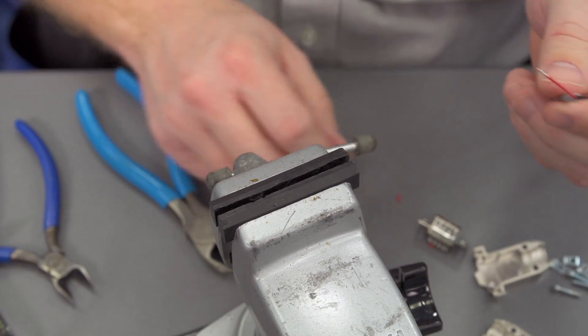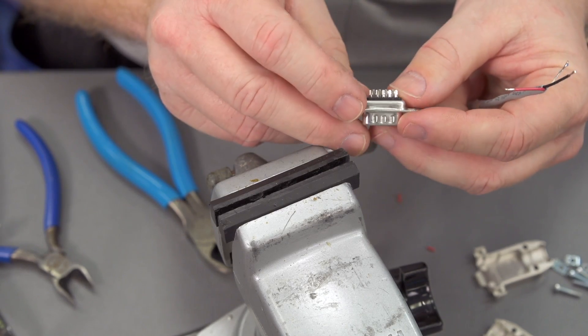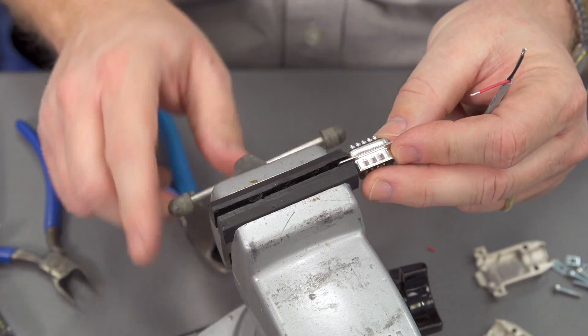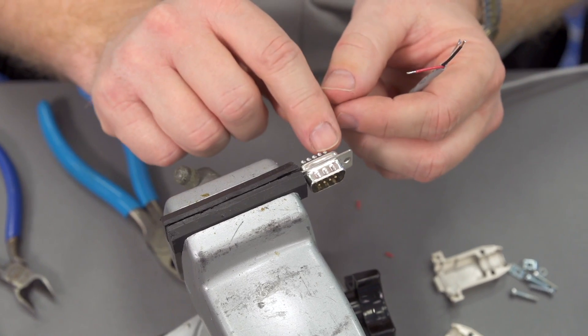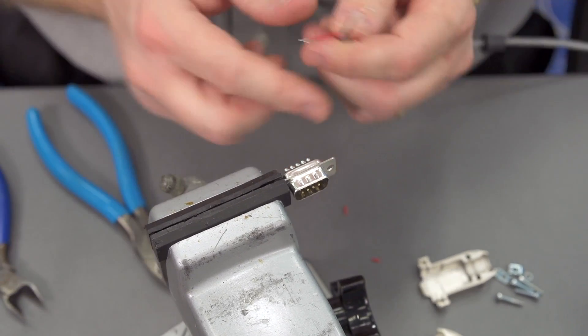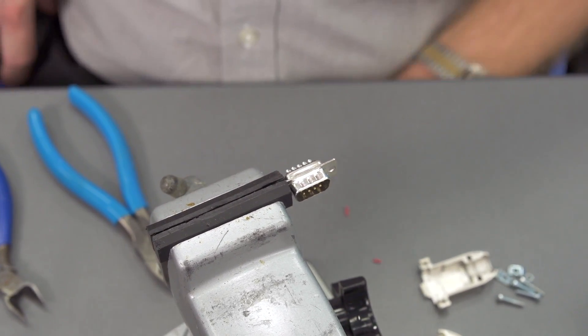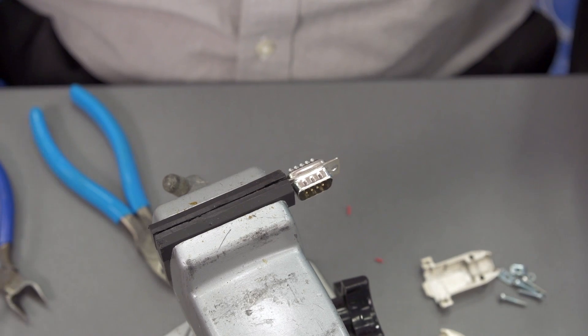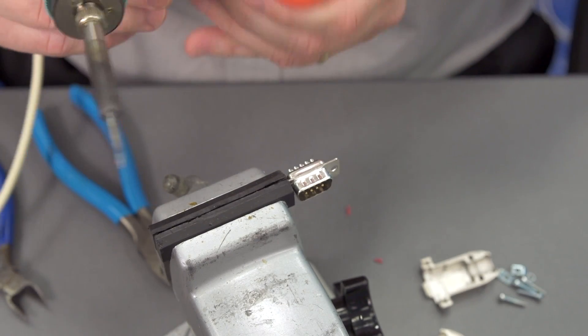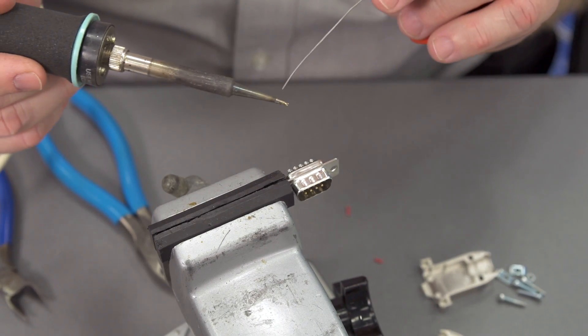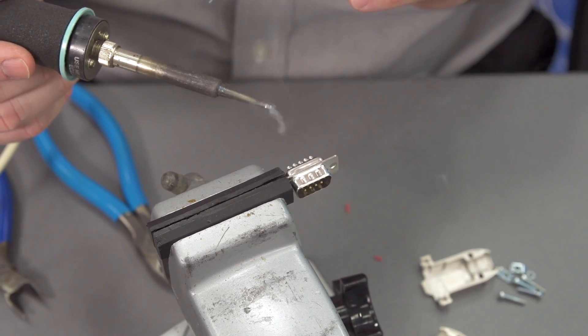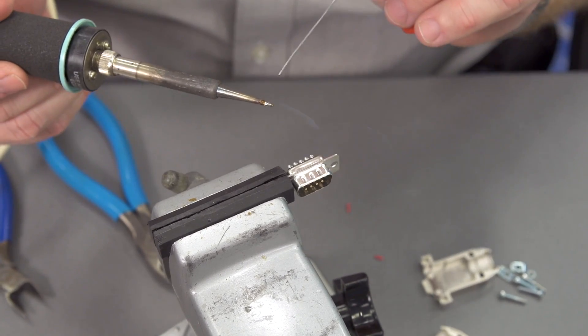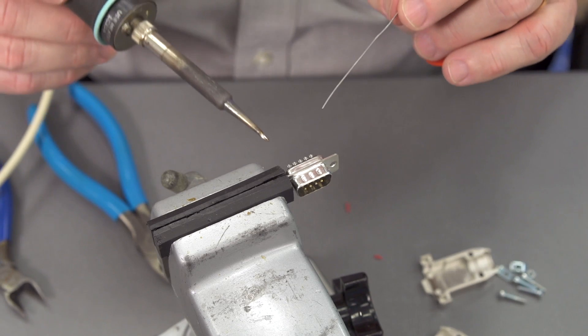We're going to be working on the top row here. We have 5, 2, and 3 that we're going to be working with. Let's go ahead and add a little solder to these cups. Make sure our iron is clean, pre-tin it. These cups are very small, so let's change to a smaller tip to make it easier.